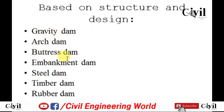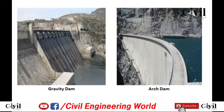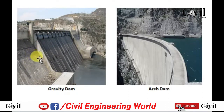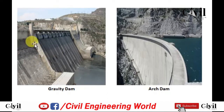dams are classified as gravity dams, arch dams, buttress dams, embankment dams, steel dams, timber dams, and rubber dams. A gravity dam, as you can see in the picture, resists the lateral forces of water due to its own weight.